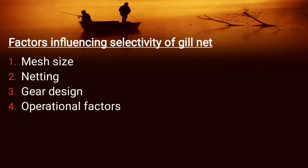What are the factors influencing selectivity of the gill net? First is mesh size, then the netting, gear design, and operational factors. Before operating the gill net we have to know information collected from the fishermen or scientists. We have to know about the fish population: species, composition, distribution, abundance, seasonal variation, and bycatch — all this we have to know earlier.